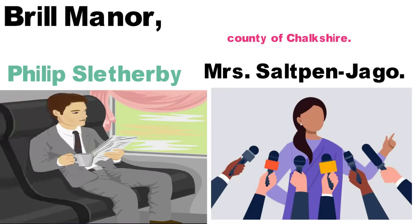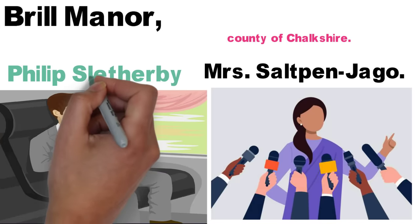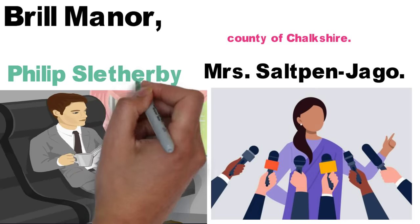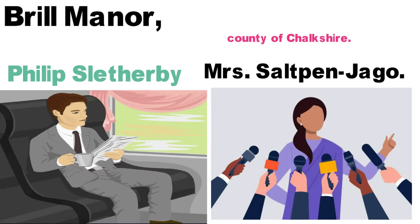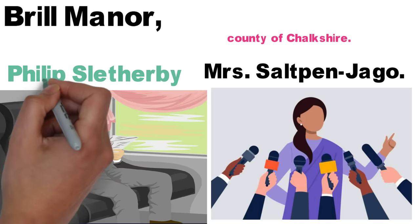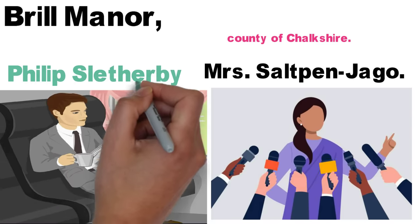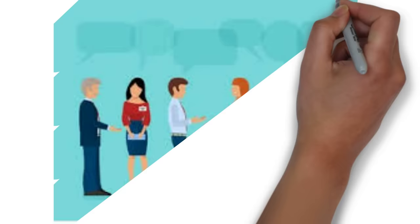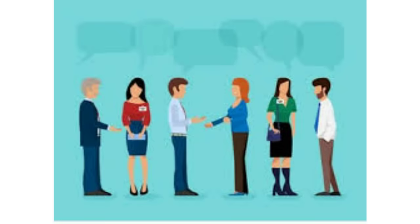We are invited to the party, and our hero is very happy. Why? Mrs. Salpanjago is here. She has a lot of influence. She has a friendship and a seat. Our hero Philip has a good name, but he has a local leader, so he doesn't have any interest. That's why we are going to go to the party.